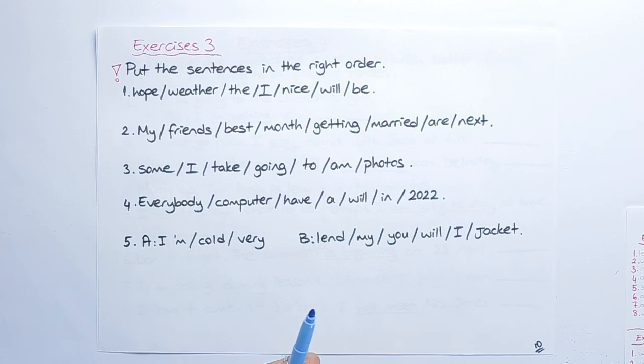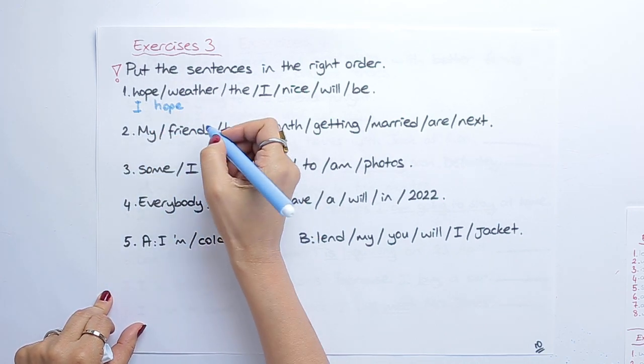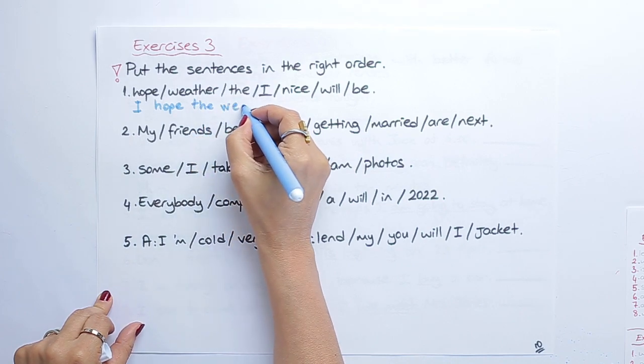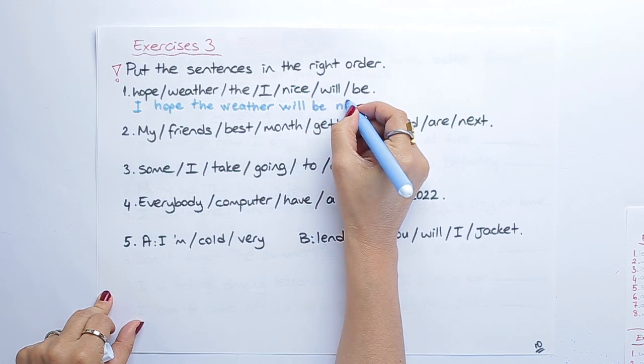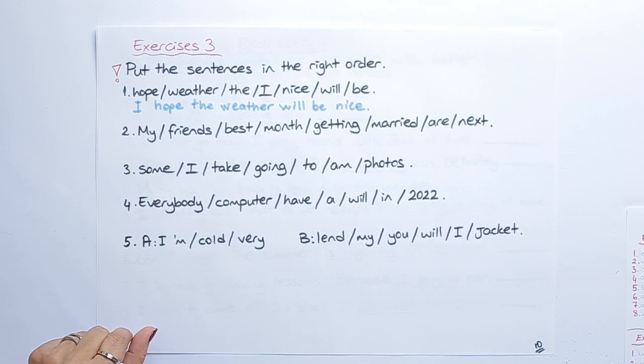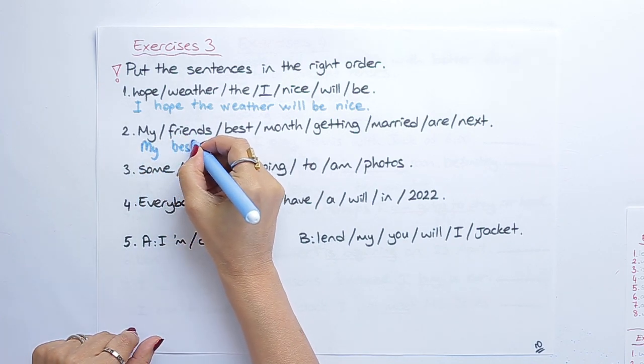Now, look at exercise 3. Put the sentences in the right order. Please look at the examples and then start. Are you ready? Shall we start? Here we go. The first one. I hope the weather will be nice. Good.